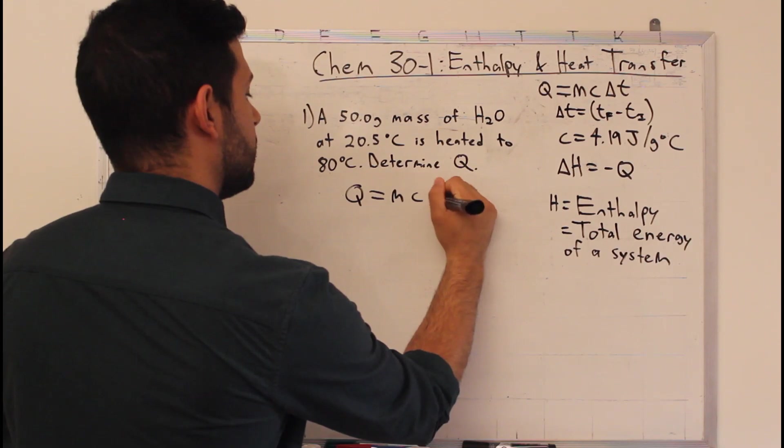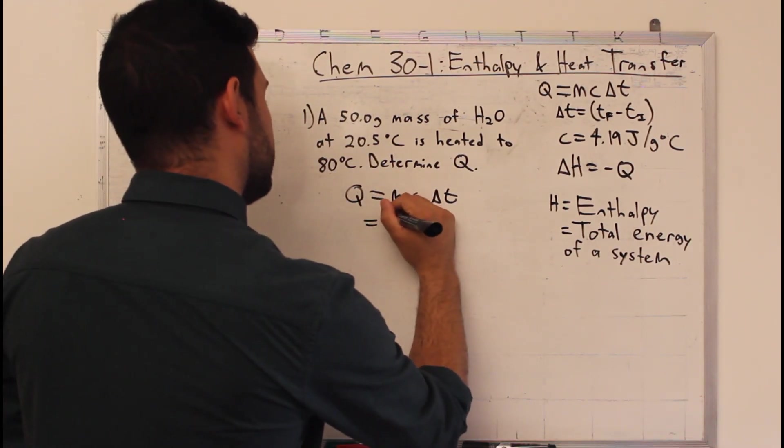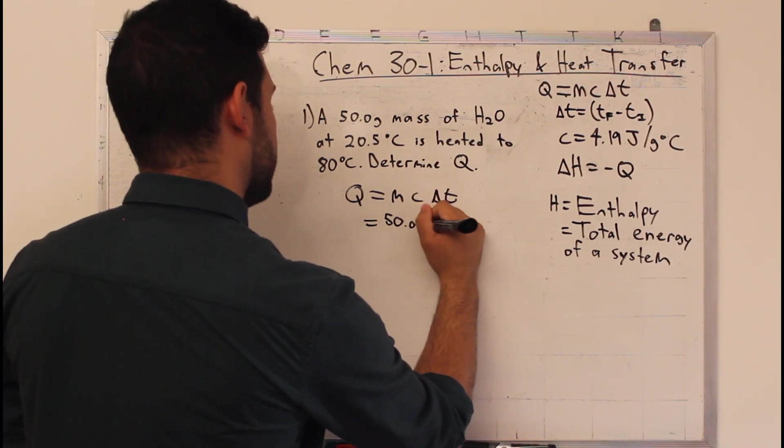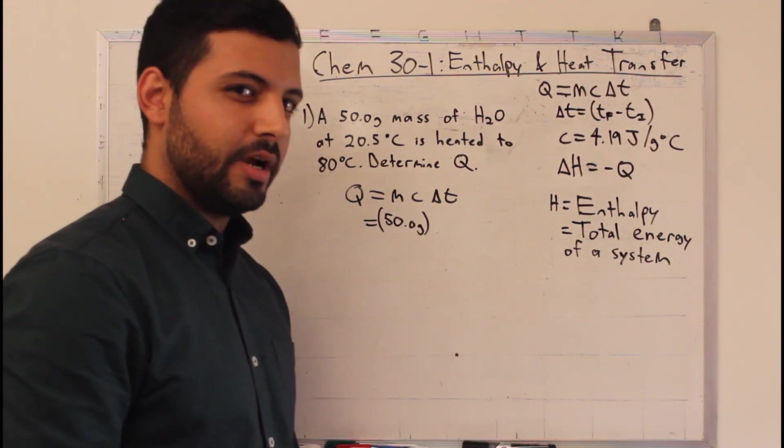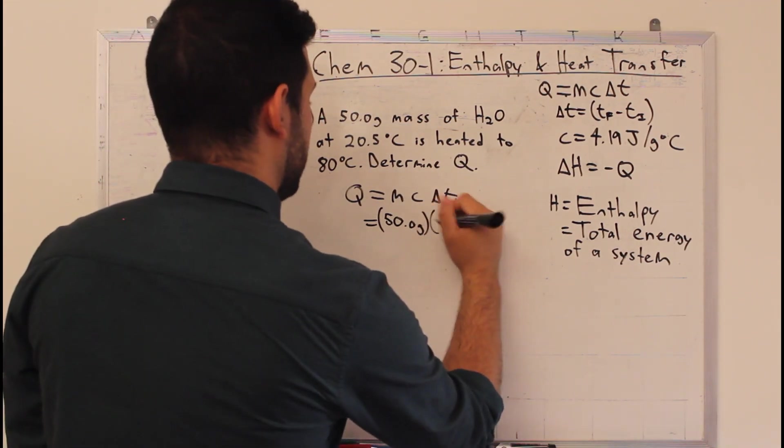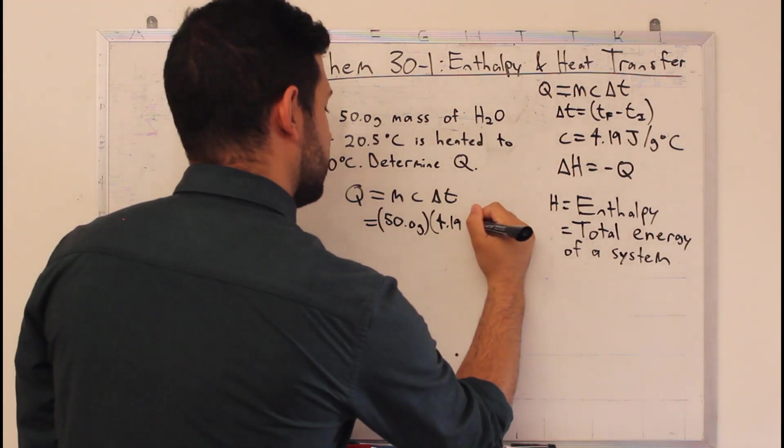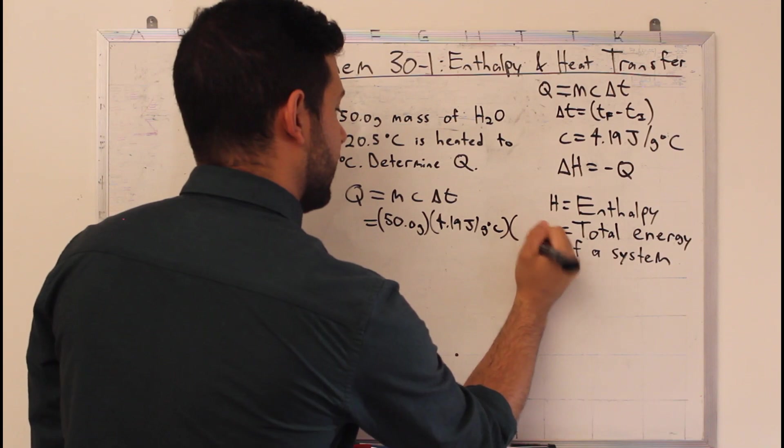Q equals MC delta T equals our mass of water, 50.0 grams. It's important you keep it in grams as well. Some questions will throw kilograms at you, you're going to have to change it to grams. So times C, 4.19 joules per gram degrees Celsius, times—